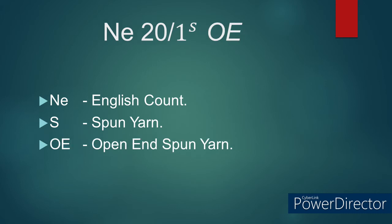Number 7: NE 20/1S OE. Here NE refers to English count. S refers to spun yarn. OE refers to open end spun yarn, meaning the yarn was manufactured using open end spinning or rotor spinning technique.